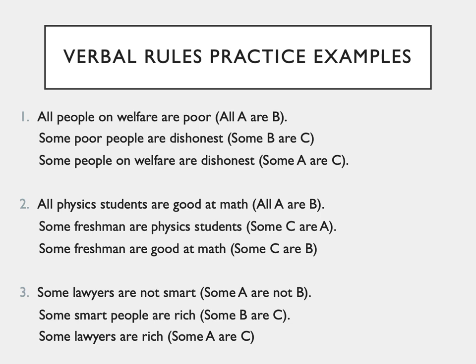Step five: if one premise is particular, the conclusion must be particular. Premise two is particular, and so is the conclusion — check. Step six: at least one premise must be affirmative. Both premises are affirmative — check. Step seven: two universal premises cannot have a particular conclusion. Premise one is universal, but premise two is particular, so we cross this step off as well. Since we have made it through all seven steps, we can now say confidently that this syllogism is valid.